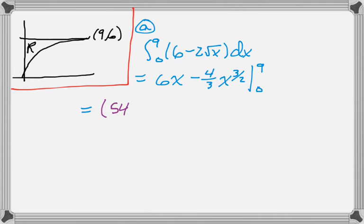So that's going to be equal to, 9 times 6 is 54. And then minus 4 thirds of, so if I take 9 and substitute it in, I'm taking the square root of 9, which is 3, and then cubing it, which is 27.